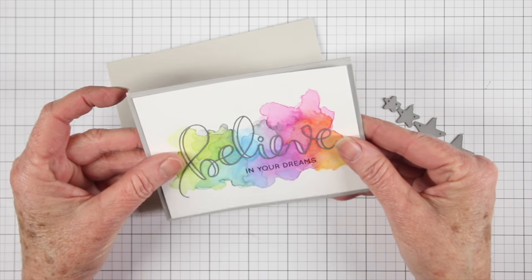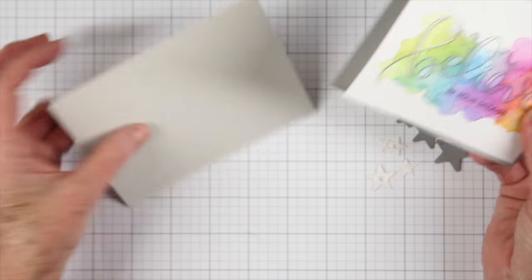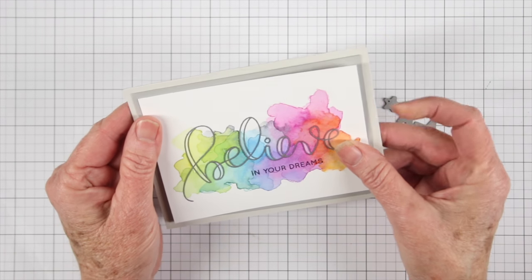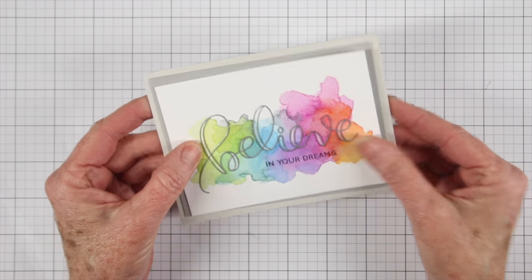So I have a panel here that I have embossed and watercolored and I also have a backing sheet of smoke cardstock and then a fog card.